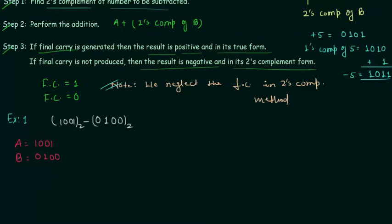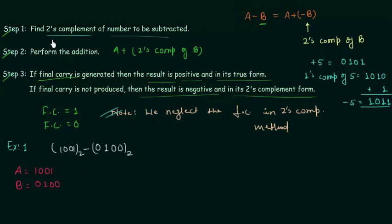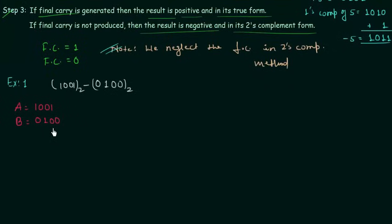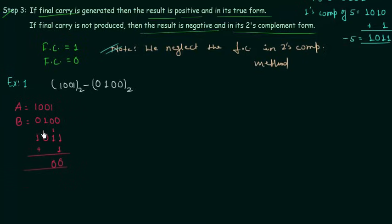From step number one, we have to calculate the two's complement of the number to be subtracted. The number to be subtracted is B, which is 0100. So we will find the two's complement of B. First we have to find the one's complement of B and then add one to it. One's complement of B is 1011, and then I will add one. So finally we get 1100. This is minus B.